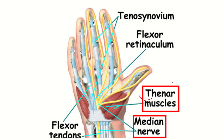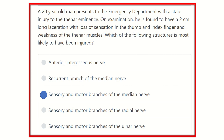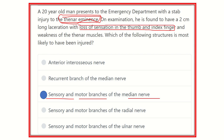In this picture it is also very clear that these are the thenar muscles. Injury occurs at the thenar area, and the thenar muscles are weakened due to injury of the branches of the median nerve. The answer is both sensory and motor branches of the median nerve — because the laceration is found at the thenar eminence, the loss of sensation in the thumb and index finger is cutaneous innervation done by the median nerve, and the weakness of the thenar muscles is also because the thenar muscle is supplied by the median nerve.